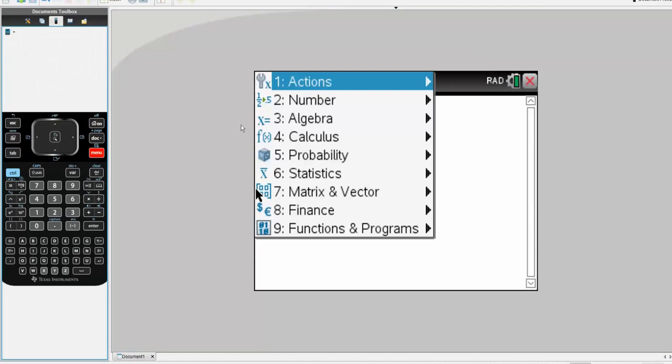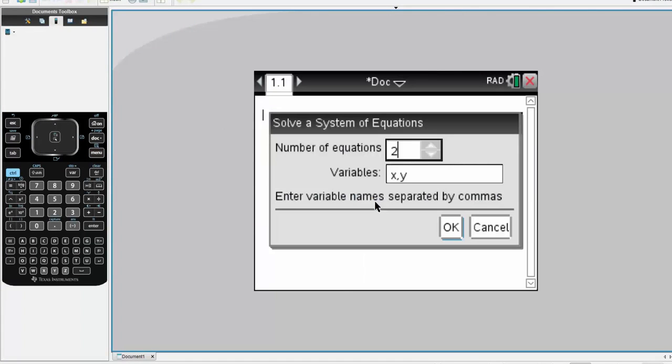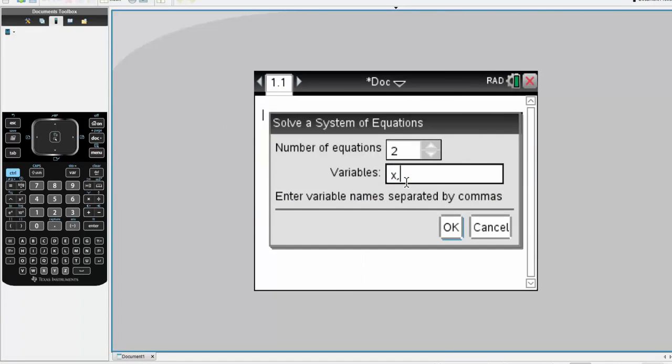So I'll hit menu, algebra, 7, solve systems of equations. We have two unknowns. So y1 when x is equal to 1 and y2 when x is equal to 1.